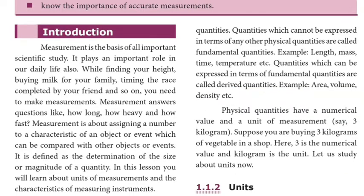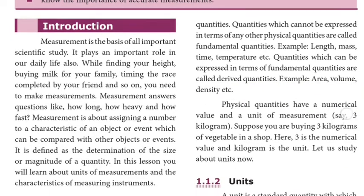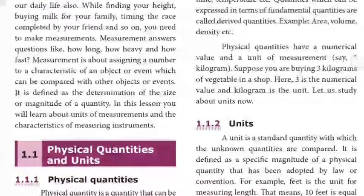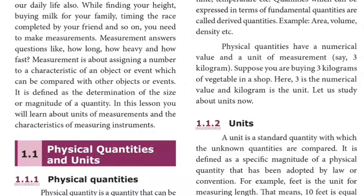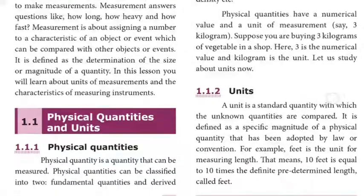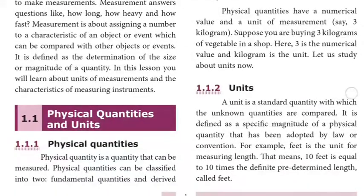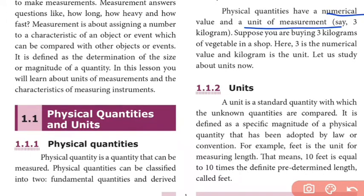There are 7 fundamental quantities, and from these 7 fundamental quantities you can find all physical quantities — including derived quantities. Physical quantities have a numerical value and a unit of measurement.